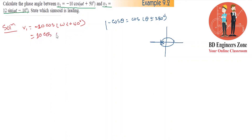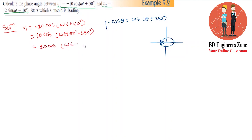So n·cos(ωt + 50° - 180°) gives us the ultimate position: ωt minus 130 degrees. This converts V1 into standard form.